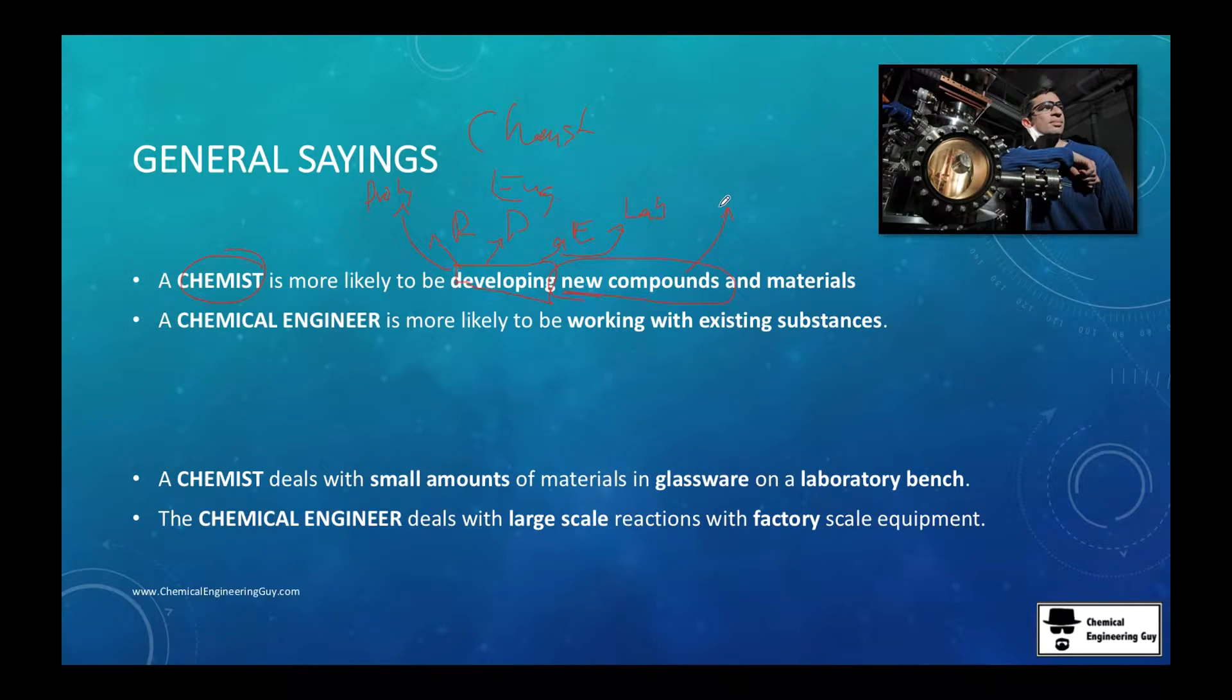And now for the engineer, we are more interested in working with existing substances. Why? Because they are already existing and they bring money and they're easier to produce. So for instance, this could be already the textile example.